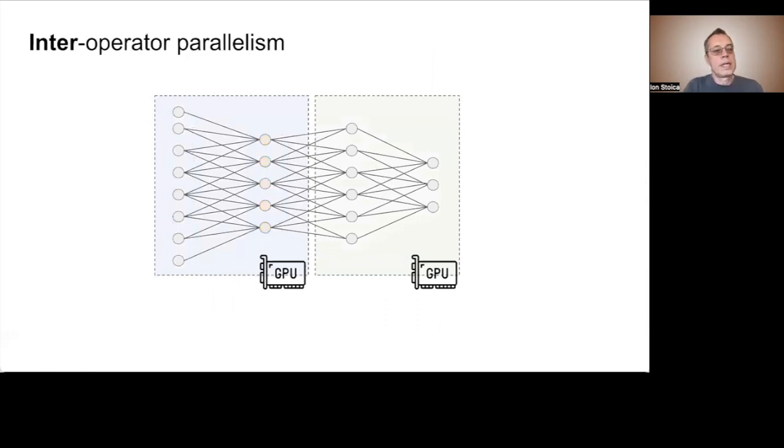So one way to parallelize these models is then to partition the model by layers or stages. This means that each matrix multiplication operation is still executed on a single GPU. We call this inter-operator parallelism, as different tensor operators can run on different GPUs.